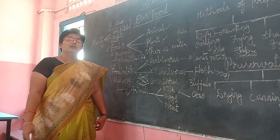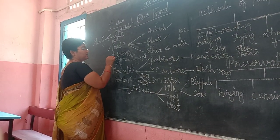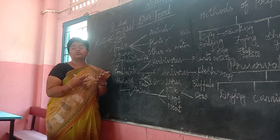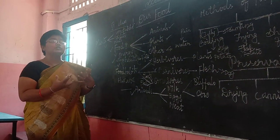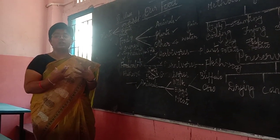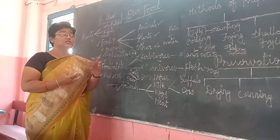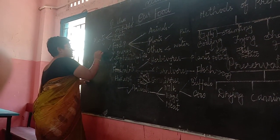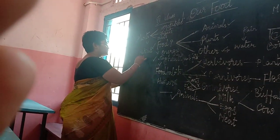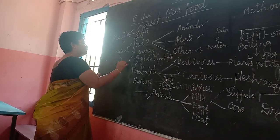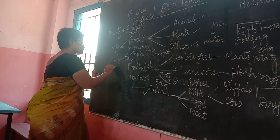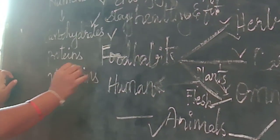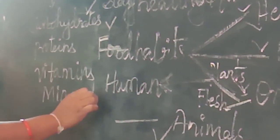Why does our body need nutrients? We have already discussed that we take food to stay healthy and fit. In the same manner, to get nutrients to our body, we need nutritious food. The food we eat should contain almost all the nutrients which our body actually needs. So let us discuss the nutritional values of food. What are nutrients and how do they help our body? Nutrients are nothing but carbohydrates, proteins, vitamins, minerals and fats.